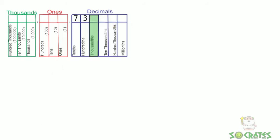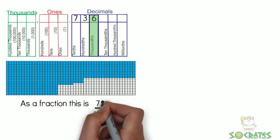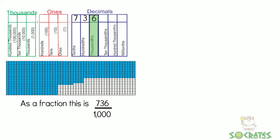So next, we're going to look at the thousandths. We have 0.736. That's like saying 736 out of 1,000.